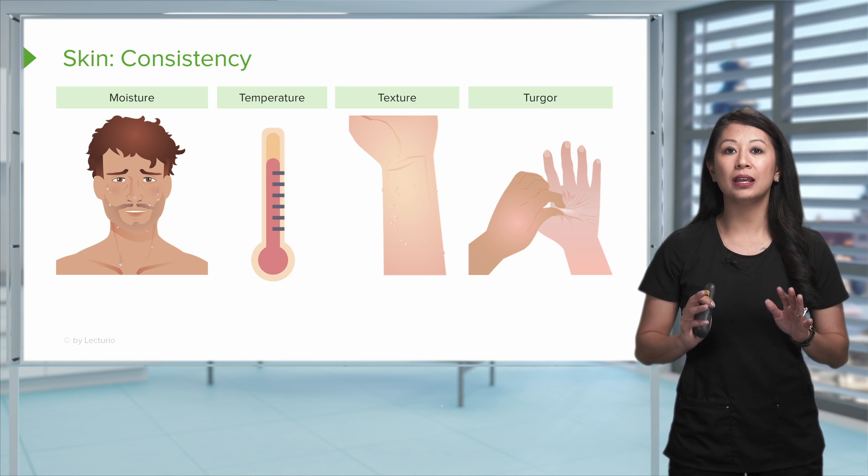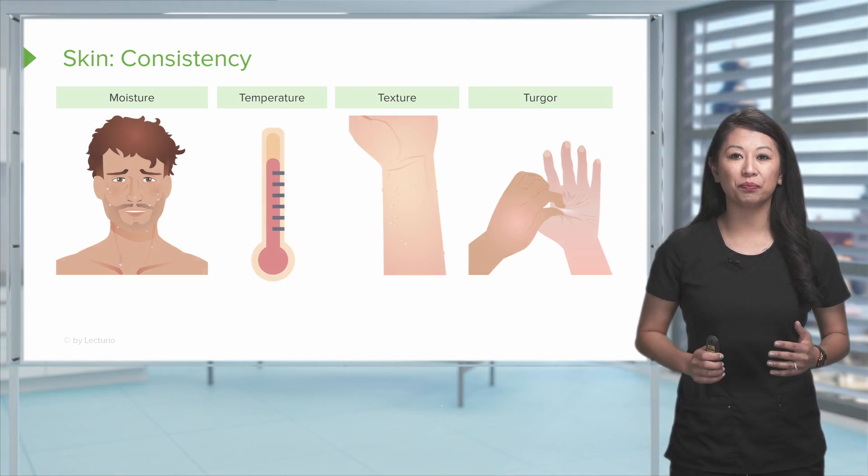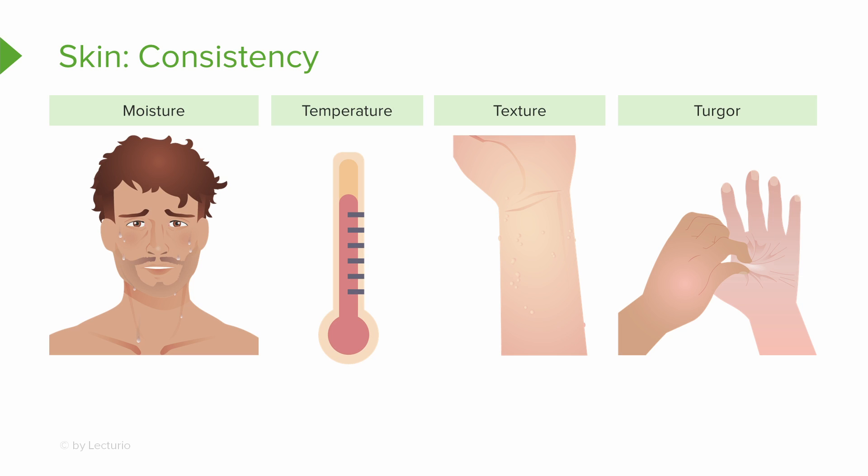And lastly, turgor is also an important consideration when we're talking about hydration status of our patient. You see here the image is at the back of the patient's hand. As you can imagine over time, especially with aging, the skin behind the hand can get kind of loose. Ideally, it's best to assess this by the patient's chest wall.